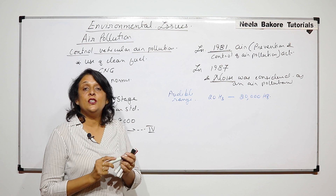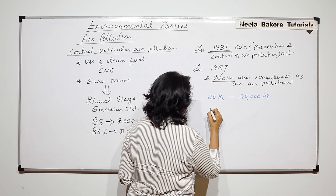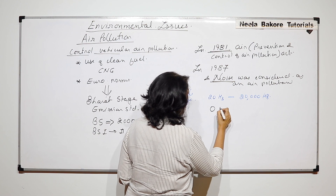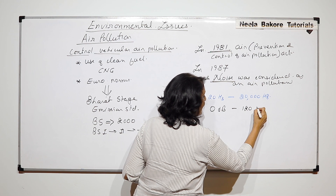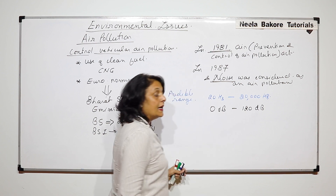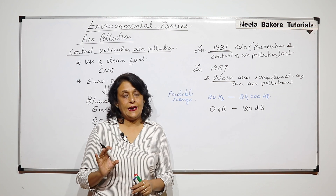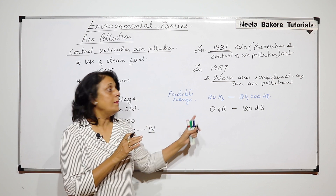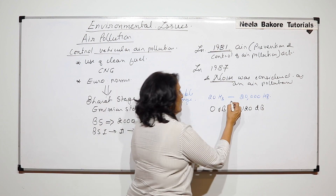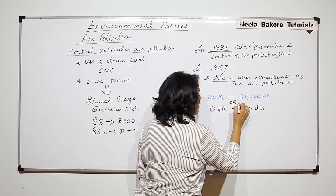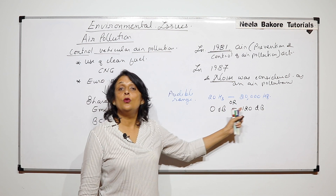If we change the unit to decibels, the normal human audible range is 0 decibels to 120 decibels. We can hear from 20 Hz to 20,000 Hz — this is the same thing written in different units: 0 to 120 decibels.